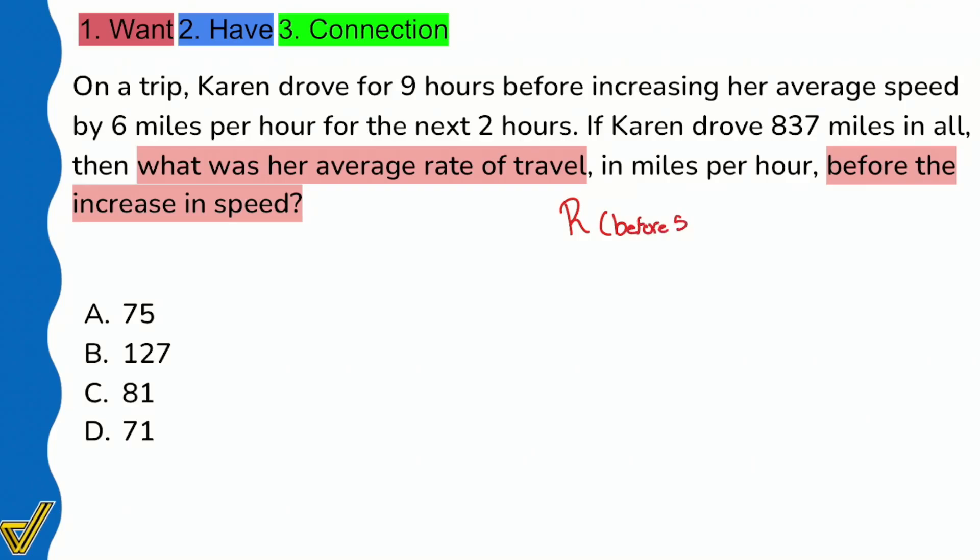That's what we're looking for: the rate before speeding up equals blank miles per hour. Anytime you're identifying the question, you want to assign it a variable because you'll be working with that variable to set up an equation or some sort of relationship or logical path, and then you're going to work on that by calculating. That's the first step.